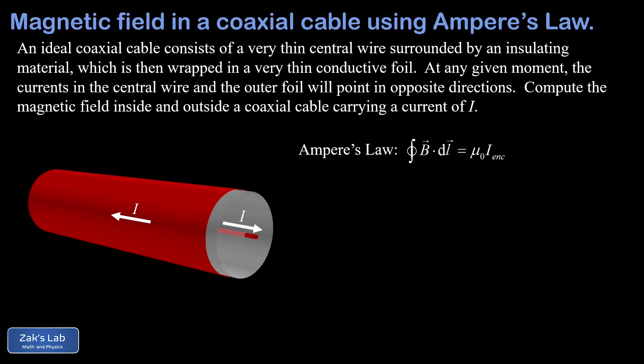In this video we're computing the magnetic field inside and outside an ideal coaxial cable. We can see in the diagram how the construction of a basic coaxial cable works. We have a very thin wire running down the center, then an insulating layer to separate the two conductors, and then a thin conducting foil wrapped around that insulating layer.